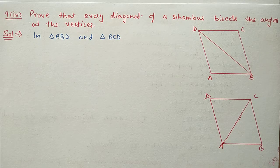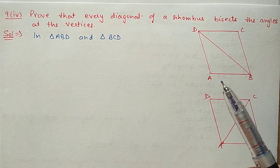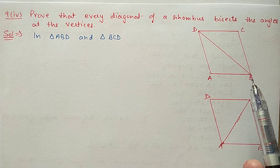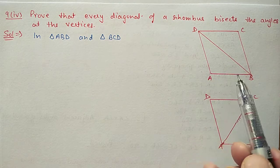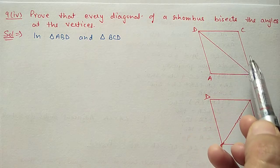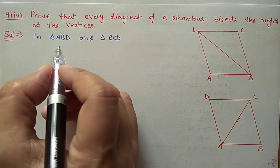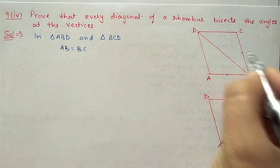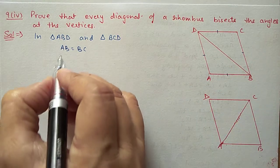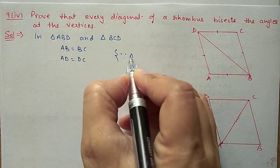Question 9 fourth part: Prove that every diagonal of a rhombus bisects the angles at the vertices. ABCD is a rhombus, all four sides are equal, and BD is a diagonal. We need to show BD bisects angle B and angle D. In triangle ABD and triangle CBD: AB equals BC, AD equals DC (sides of rhombus), and BD is common. By SSS rule, triangle ABD is congruent to triangle CBD.